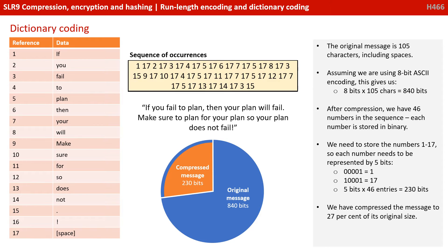The original message is 105 characters, and that includes spaces. Assuming we're using 8-bit ASCII encoding, this gives us 8 bits per character times 105 characters for a total of 840 bits. After compression, we have 46 numbers in our sequence, and each of those numbers will need to be stored in binary. We need to store the numbers 1 to 17, therefore we're going to need 5 bits to store each of those numbers. So 5 bits per number times 46 of them is 230 bits. We've compressed the message to 27% of its original size, while at the same time being able to recreate the entire message.